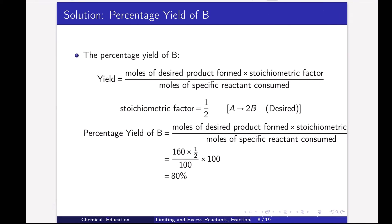Next is percentage yield of B. Yield equals moles of desired product formed multiplied by stoichiometric factor, divided by moles of specific reactant consumed, into 100. The stoichiometric factor is 1/2 because the reaction is A to 2B (1 mole A gives 2 moles B, so factor = 1/2). Percentage yield of B = 160 × (1/2) divided by 100, into 100 = 80%.